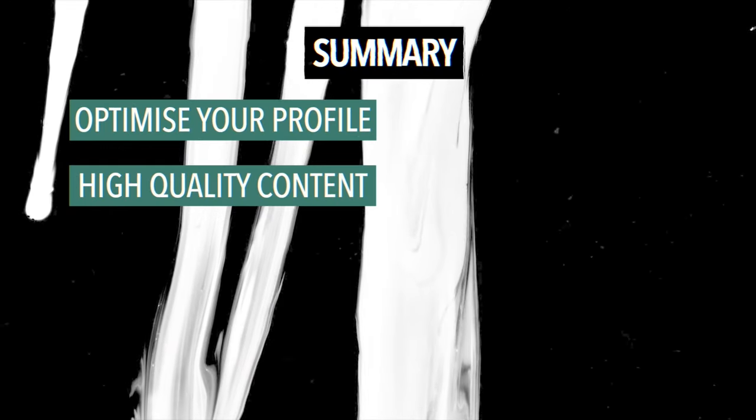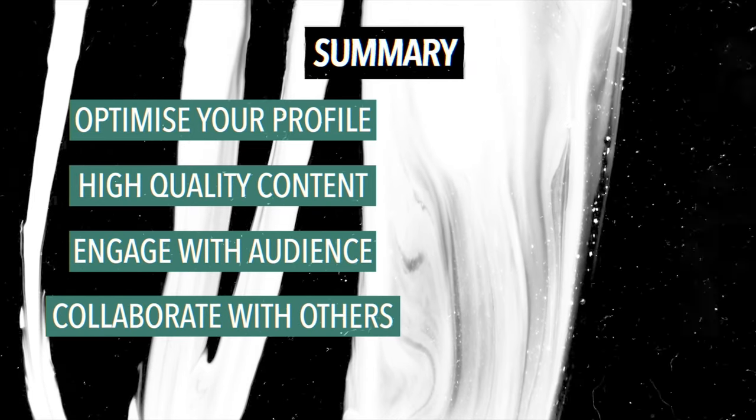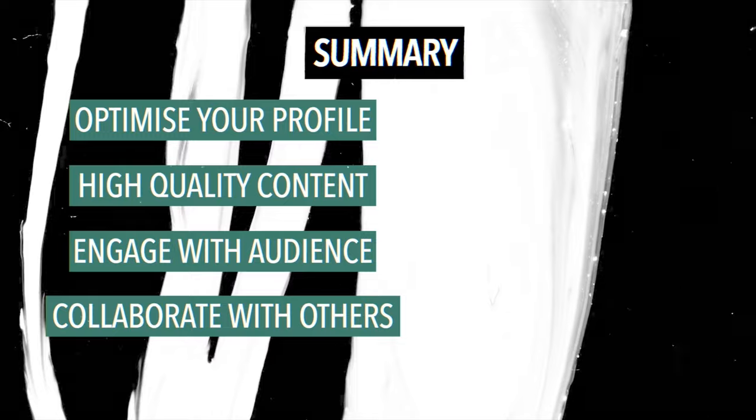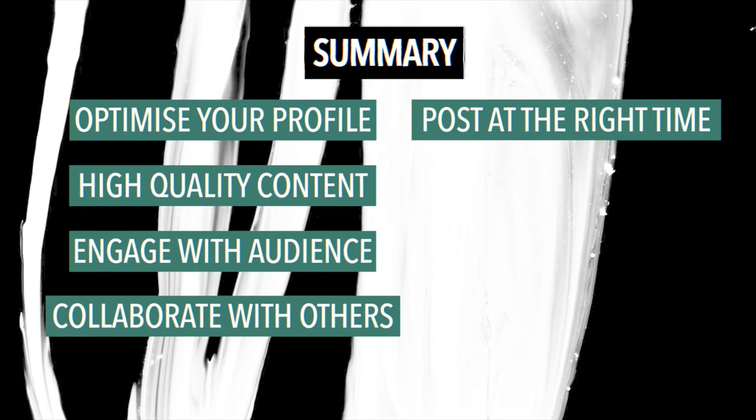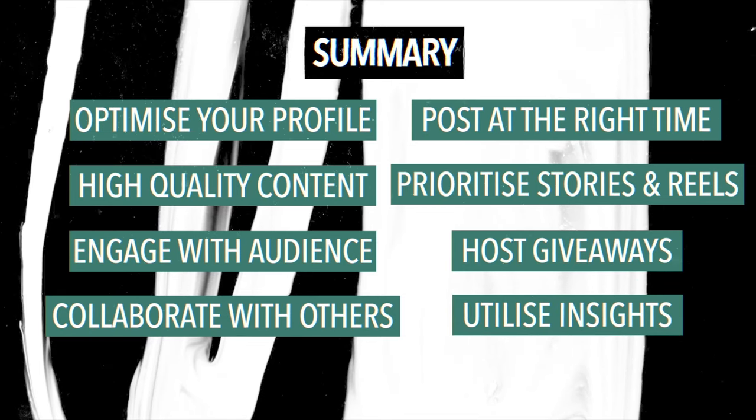Let's summarise real quick. Step one: optimise your Instagram profile — make sure everybody's first impression is a good one. Step two: always high quality content — speaks for itself. Step three: probably the most important one — engage with your audience; nurture them into long term fans. Step four: collaborate with others and share the following of people in your niche. Step five: post at optimum times by utilising your Instagram insights. Step six: put a lot of your creative time into stories and reels — this is where people hang around on Instagram most. Step seven: potentially host a giveaway or competition to attract those initial followers, then try and make them stay. Step eight: don't get complacent — analyse your insights and stay ahead of the curve.